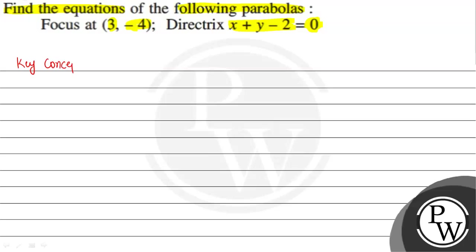The key concept to solve this question: suppose we have a parabola and a directrix which is a line. Suppose the line equation is ax plus by plus c equal to 0. The dotted line is the axis of the parabola, and this is the directrix. Suppose the focus of the parabola has coordinates alpha and beta.